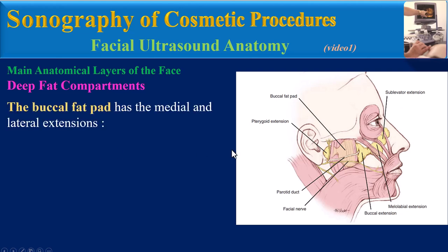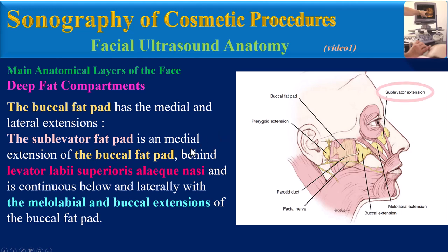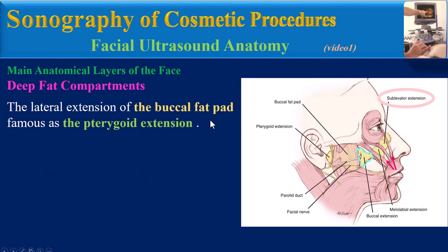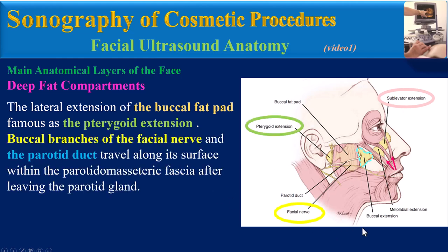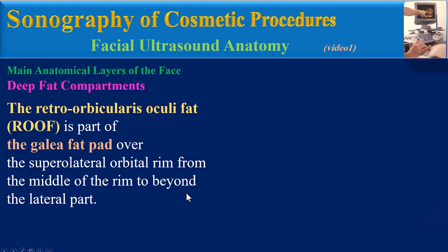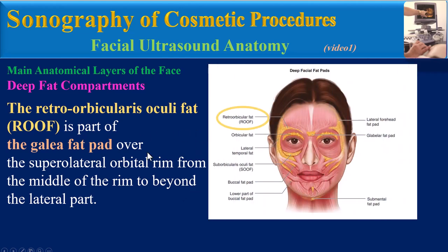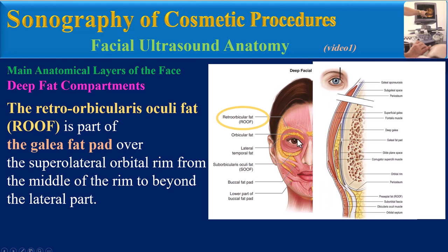Functionally, the buccal fat pad facilitates free gliding movement to the surrounding muscles of mastication. It has medial and lateral extensions. The sub-levator fat pad is a medial extension of the buccal fat pad, behind the levator labii superioris, and is continuous below and laterally with the melolabial and buccal extensions of the buccal fat pad. The lateral extension of the buccal fat pad, known as the pterygoid extension — buccal branches of the facial nerve and parotid duct travel along its surface within the parotid-masseteric fascia after leaving the parotid gland.